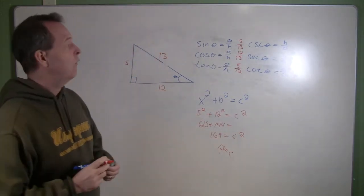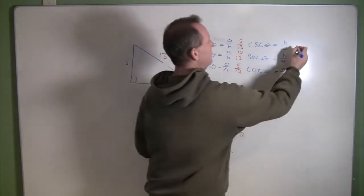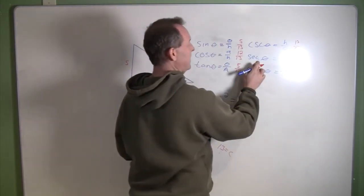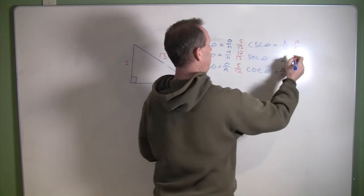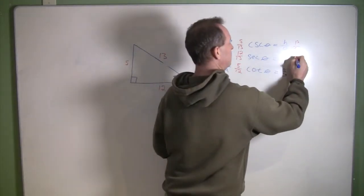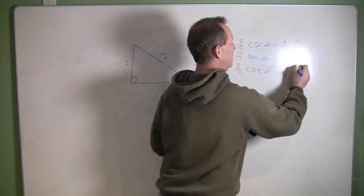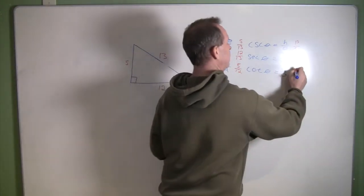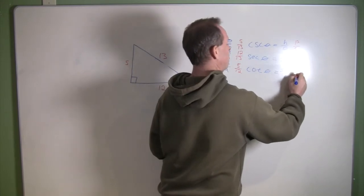And then looking over at cosecant, that would become 13 over 5. Secant would become 13 over the adjacent. And the cotangent would be the adjacent over the opposite, 12/5.